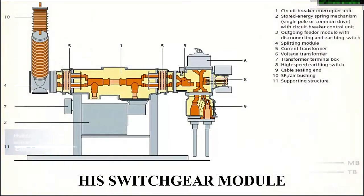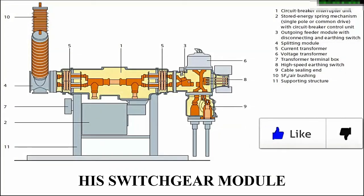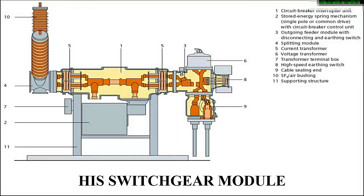This is the typical HIS switchgear module, which comprises of around 11 different components like circuit breaker, current transformer, and voltage transformer. The main difference between a GIS module and an HIS module is that the HIS module only insulates the main components like circuit breaker, current transformer, and voltage transformer. It does not insulate the bus bars or lightning arresters. This is the main difference between HIS and GIS.